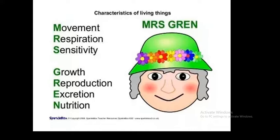The third characteristic is sensitivity — the ability to detect or sense stimuli in the external or internal environments and to make appropriate responses. For example, plants are sensitive to light, which is why they move towards it. Also, humans can respond to external stimuli, such as touching a sharp pin, which may lead to a reflex action. This is sensitivity.